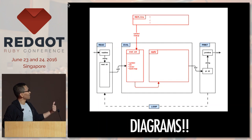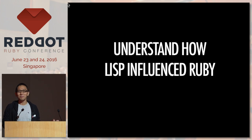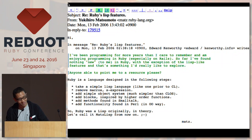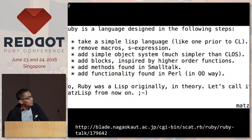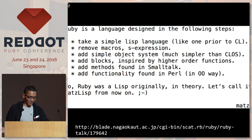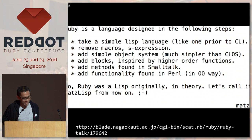When you implement this, you actually understand how Lisp influenced Ruby. Back in 2006, Matz wrote this in an email to the Ruby Talk mailing list. He said: 'Ruby is a language designed in the following steps: take a simple list language, remove macros as expressions, add simple object system much simpler than CLOS, add blocks, add methods found in Smalltalk, add functionality found in Perl.'